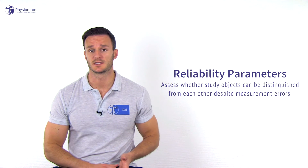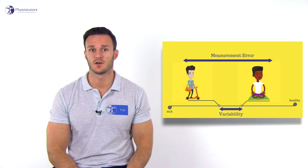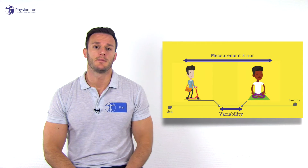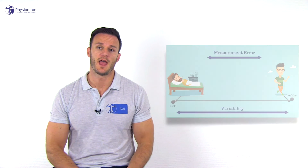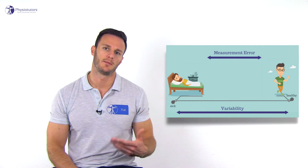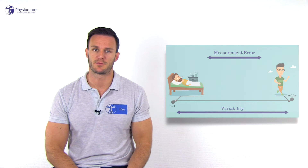Reliability parameters assess whether study objects, often persons, can be distinguished from each other despite measurement errors. When reading a paper about reliability, you should always be aware of the group that was tested. If the cohort was very homogenous — for example, only healthy people — reliability values will be much lower. If the cohort is really heterogeneous — for example, really sick and really healthy people — reliability values will be much higher than in real-life practice.